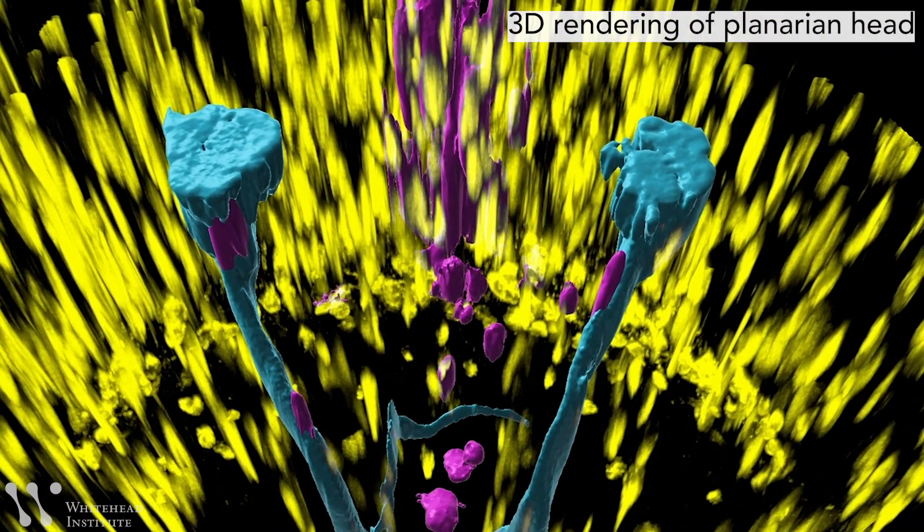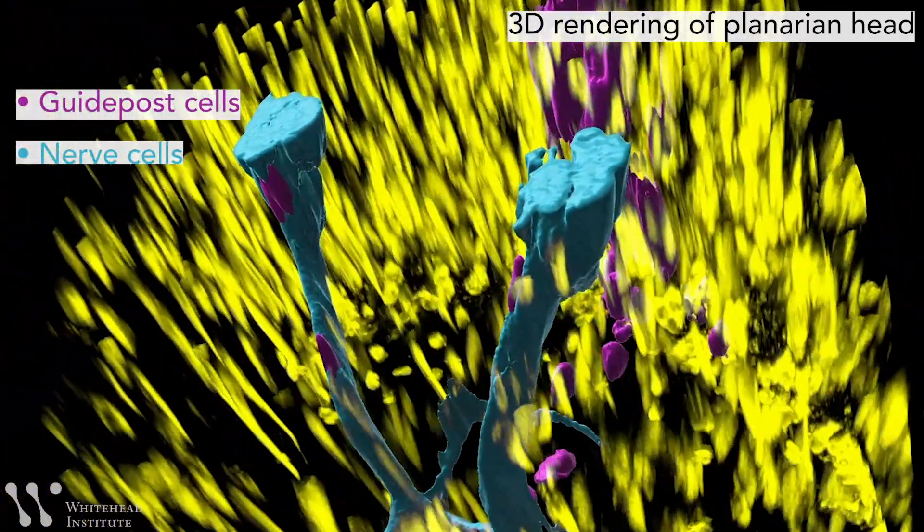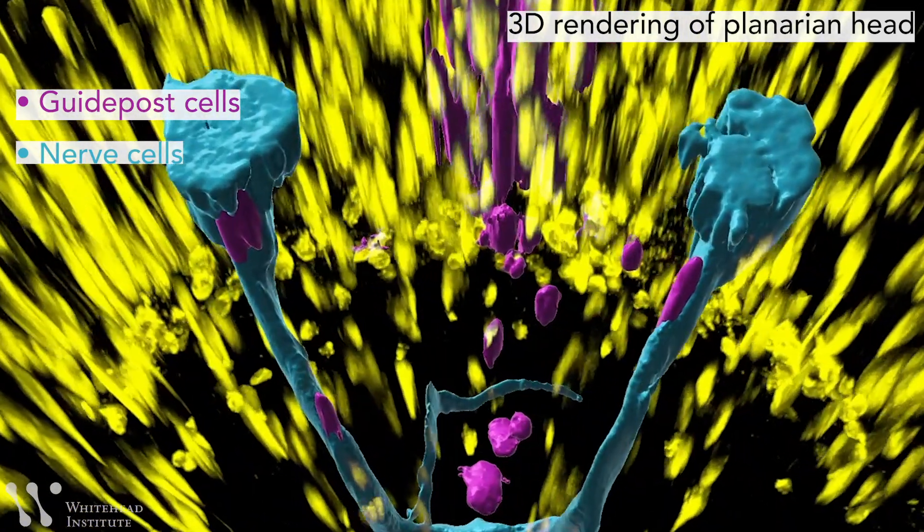The researchers found that a small group of muscle cells in the head, called guidepost cells, are able to attract developing nerve cells and point them in the right direction.